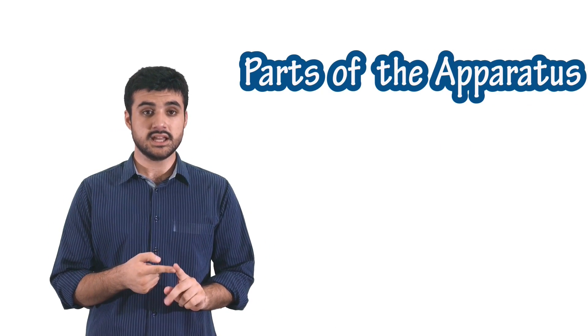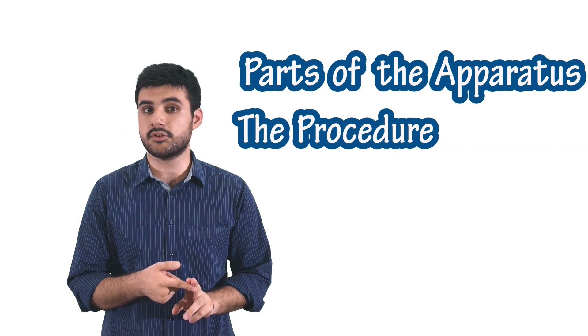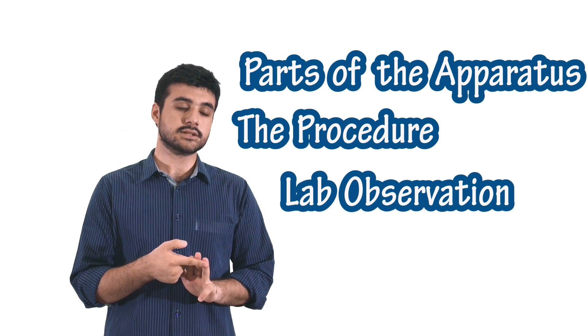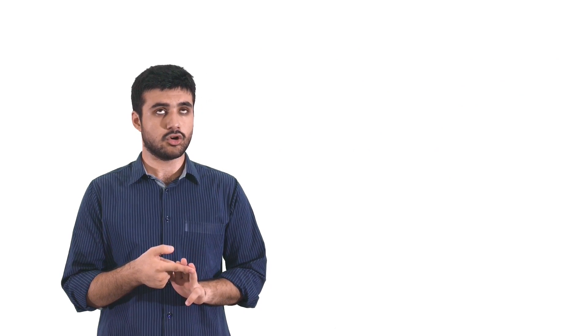And lastly, each one of these experiments is subdivided into three different parts. First, we explain and name the parts of the apparatus. Second, we explain the procedure and how the experiment has been performed. And third, we give you all the lab observations and calculations we made. Hope that sums up all the confusion. Enjoy!